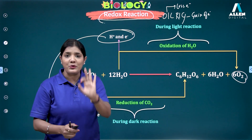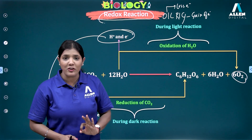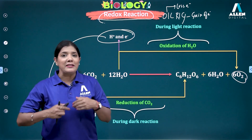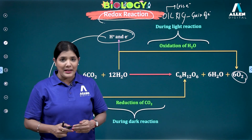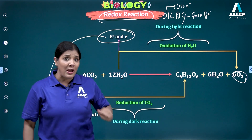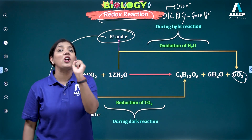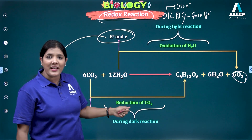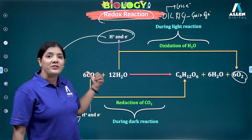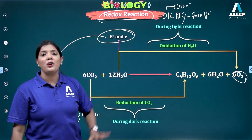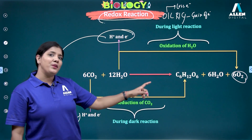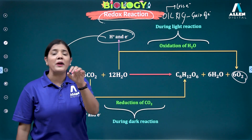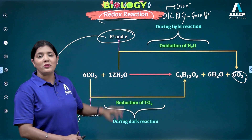To summarize: photosynthesis is called a physico-chemical process and a photo biochemical process. Since glucose is synthesized, it is an anabolic process. Since solar energy is entrapped, it is an endergonic process. It is a redox reaction because CO2 is reduced to glucose and water is oxidized. During photosynthesis, oxygen is released from water, not from CO2.